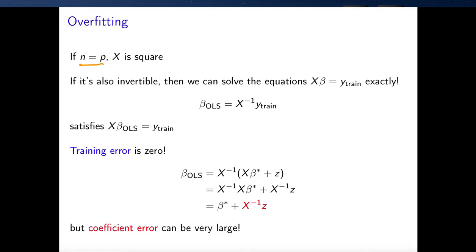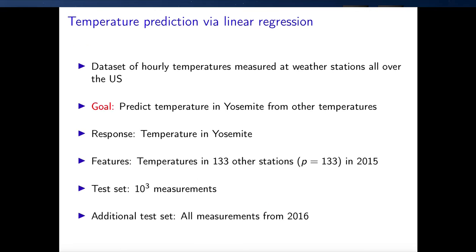Our projection argument is a generalization of this to when the number of data is not exactly equal to the number of features. It predicts that we're going to be fine as long as the number of data is large with respect to the number of features. Now, I've been telling you this story based on linear algebra and projections — why would you believe that this is actually useful in practice? Let's take a look at a real-world data example.